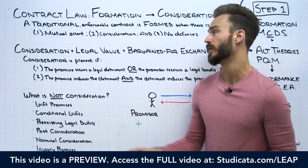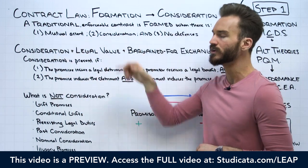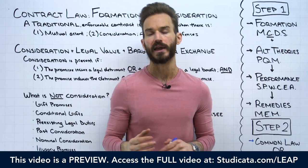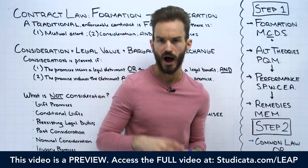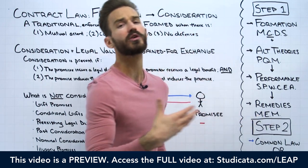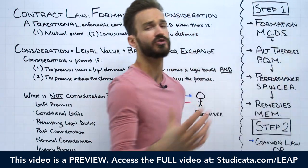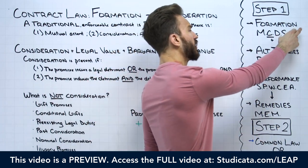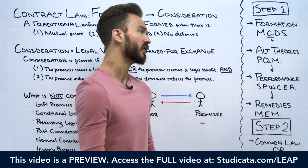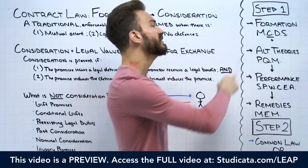Remember, we have three elements. We need mutual assent between the parties, consideration, and no defenses to formation that would invalidate the otherwise valid contract. In the big picture flow of our contract law analysis, we're still talking about formation of the traditional enforceable contract — we're moving past mutual assent onto consideration.